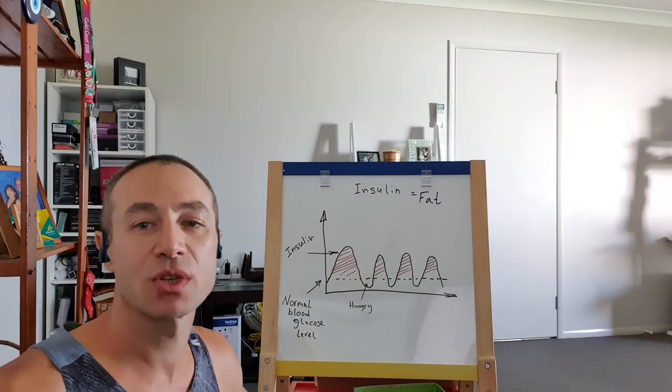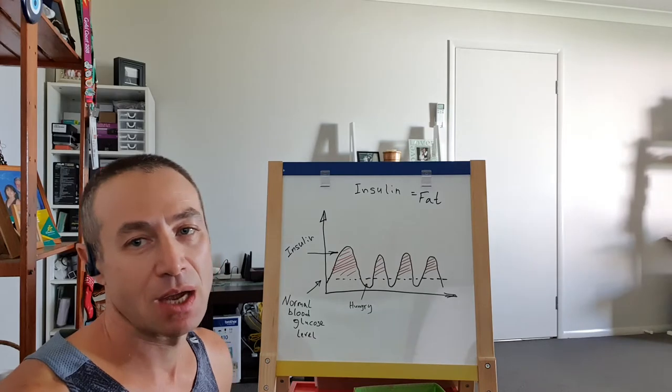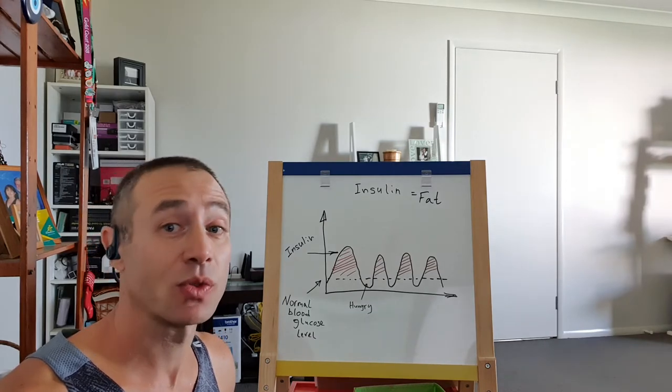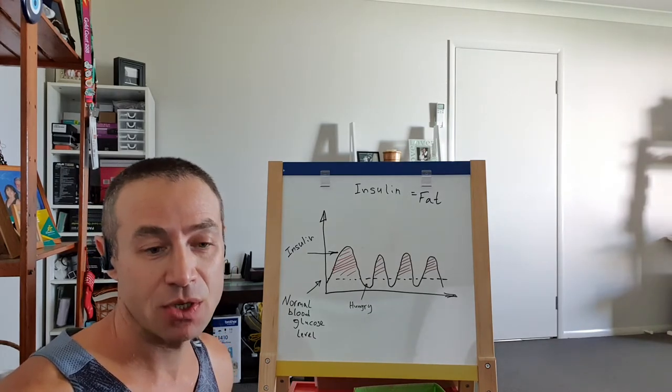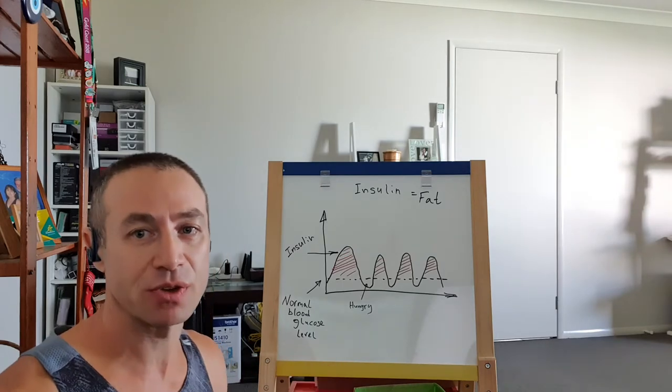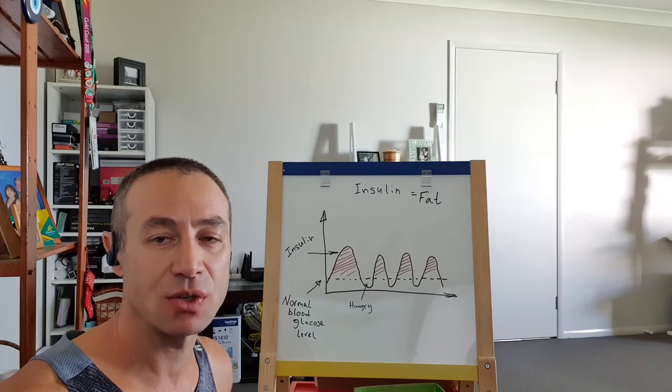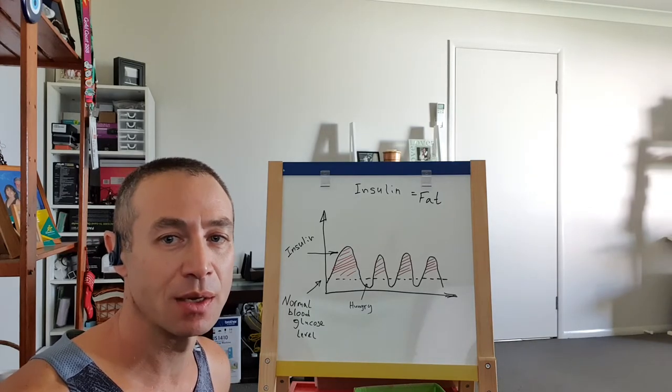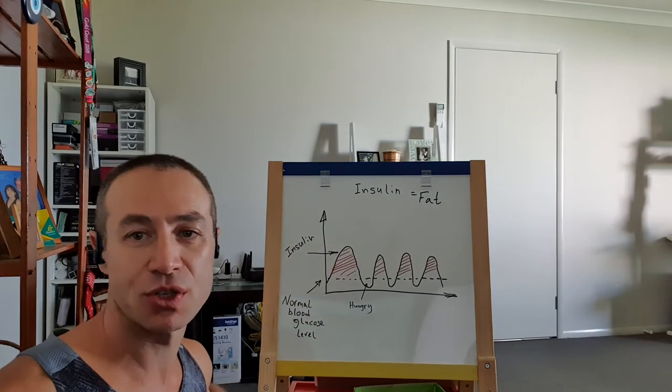So insulin levels when they're low, our body is most efficient. Let's talk about what triggers insulin, and a good place to start is what does not trigger insulin. None of the fat, consumption of fat, would trigger insulin response. So any fat that you consume basically would not be on that chart.